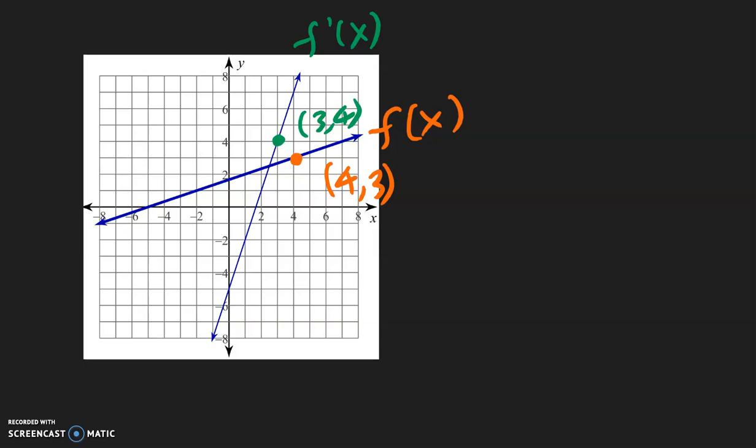And just to make sure, let's do the same thing with a different point. Here, we have 0, negative 5. Which means I should find another point at negative 5, 0. Which we see over here. Negative 5, 0. So we can say that yes, they are inverses.